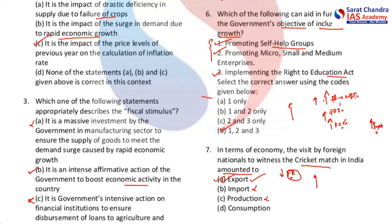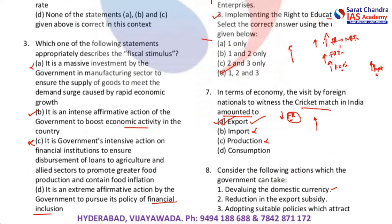First option: devaluing the domestic currency. When you devalue the domestic currency, let's assume earlier one dollar was getting 70 rupees and now after devaluing, the rupee weakens to 80 rupees per dollar. Let's say there is a product manufactured for 480 rupees. Earlier at 70 rupees per dollar, that was about 6.9 dollars. Now at 80 rupees per dollar, that comes to only 6 dollars.